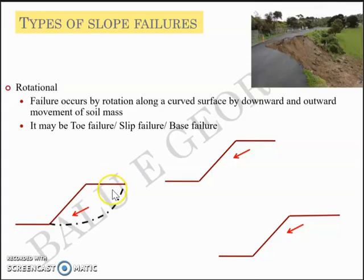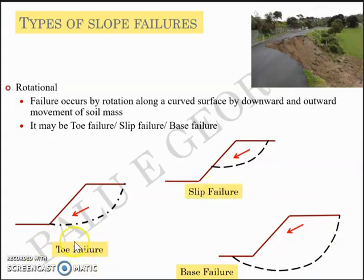It can be like this called the toe failure, or it can be like this called the slip failure, or it can be like this called the base failure. So the first one is toe failure where the failure surface passes through the toe of the slope, and the second one is a slip failure where the failure surface passes just above the toe of the slope. And the third one is a base failure, where the base of the slope is included within the soil mass that's getting eroded. So these are the types of rotational failures.